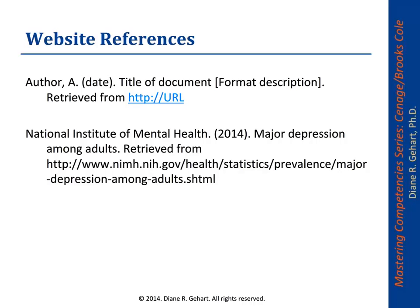The last type of reference I'm going to talk about is the website reference. You don't want too many of these, and you want them only for major widely recognized — typically government type — sites. You do the author and first initial, the date, and then the title of the document — again not in typical title case. Then you put 'Retrieved from' and the URL. Here you see an example from the National Institutes of Mental Health: 'Major Depression Among Adults, retrieved from,' and then the full URL for that specific page. The best place to get formats for website references is on the APA website for the manual of style.